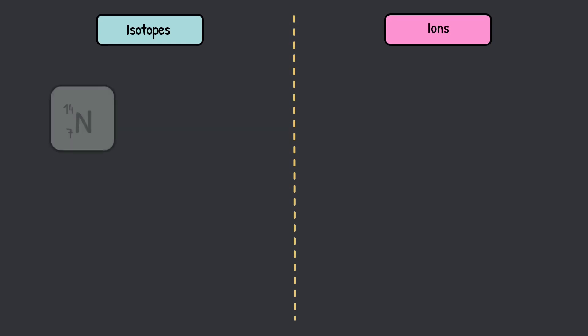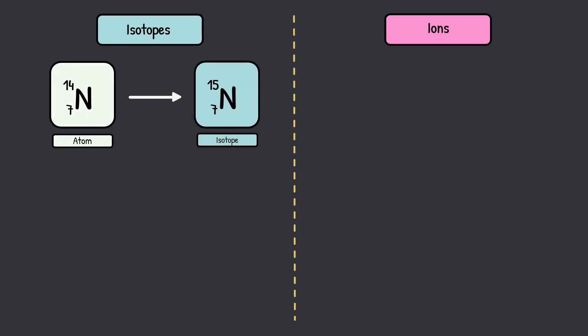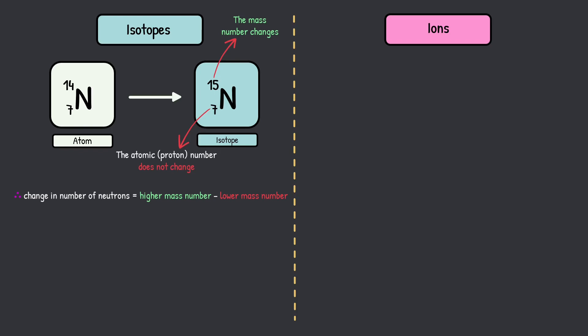Let's start with isotopes. Let's say we're looking at an atom and we're changing it into an isotope. What is the difference between these two things? The mass number changes, whereas the atomic or proton number does not change — otherwise it would no longer be nitrogen. This applies to every single element. So if the mass number changes with an isotope, we can calculate the change in the number of neutrons by simply doing the higher mass number minus the lower mass number. For nitrogen it's 15 minus 14, giving us a change of one neutron.